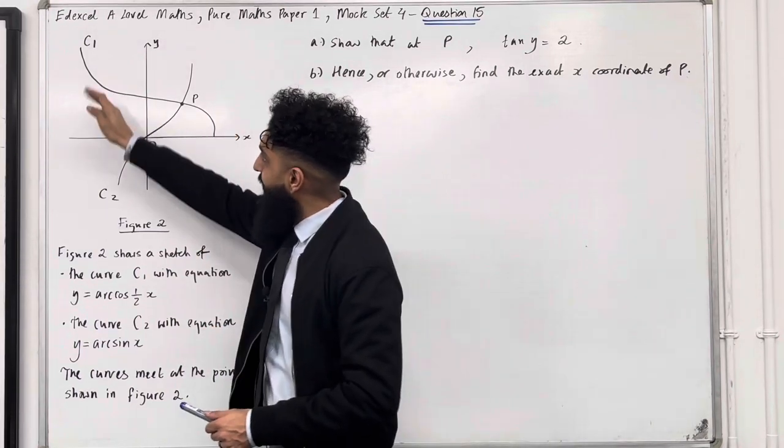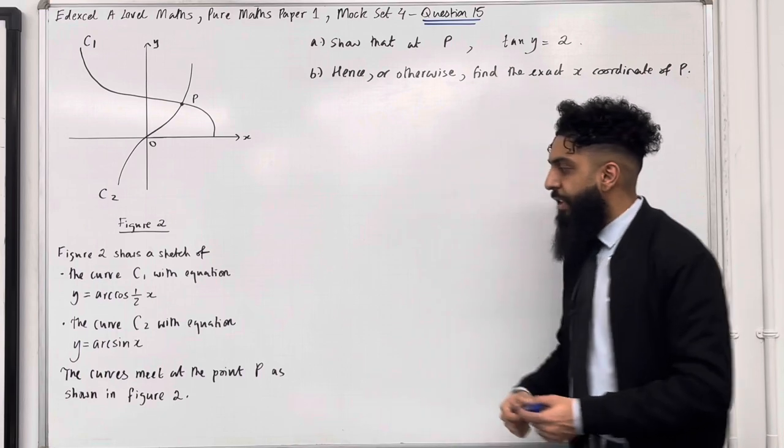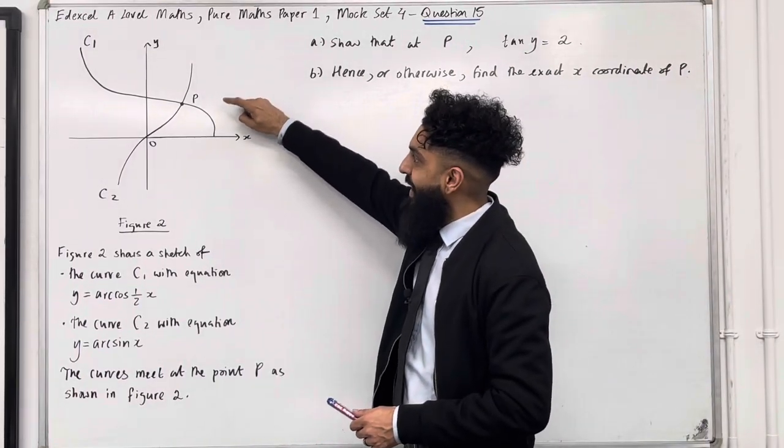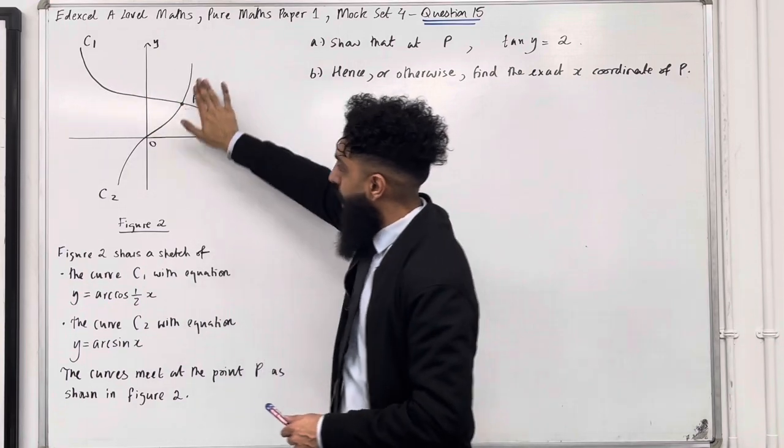So we've got the curve C1 and we've got the curve C2. The curves meet at the point P as shown in Figure 2. So the point P is the point of intersection between the curve C1 and the curve C2.